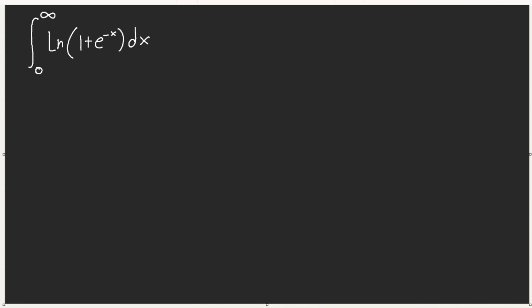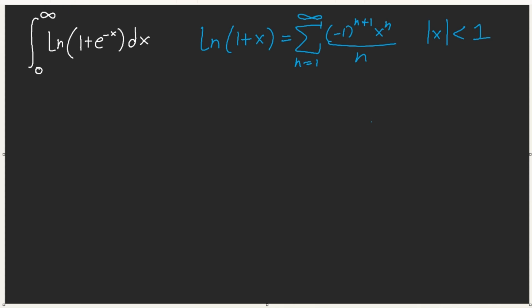If you remember, most Taylor series that we have — let me first show you. To recall, the Taylor series for ln(1+x) is equal to the sum from n=1 to infinity of (-1)^(n+1) * x^n / n, and the condition is that x has to be between -1 and 1. But then we have e^(-x) here. Can we use Taylor series in this? Yes, we can.